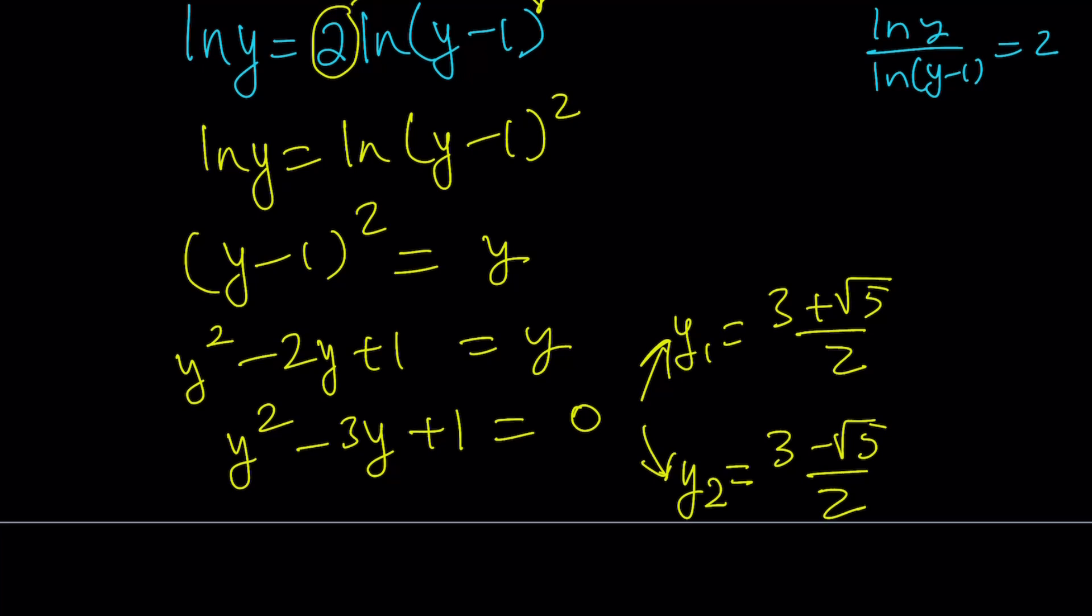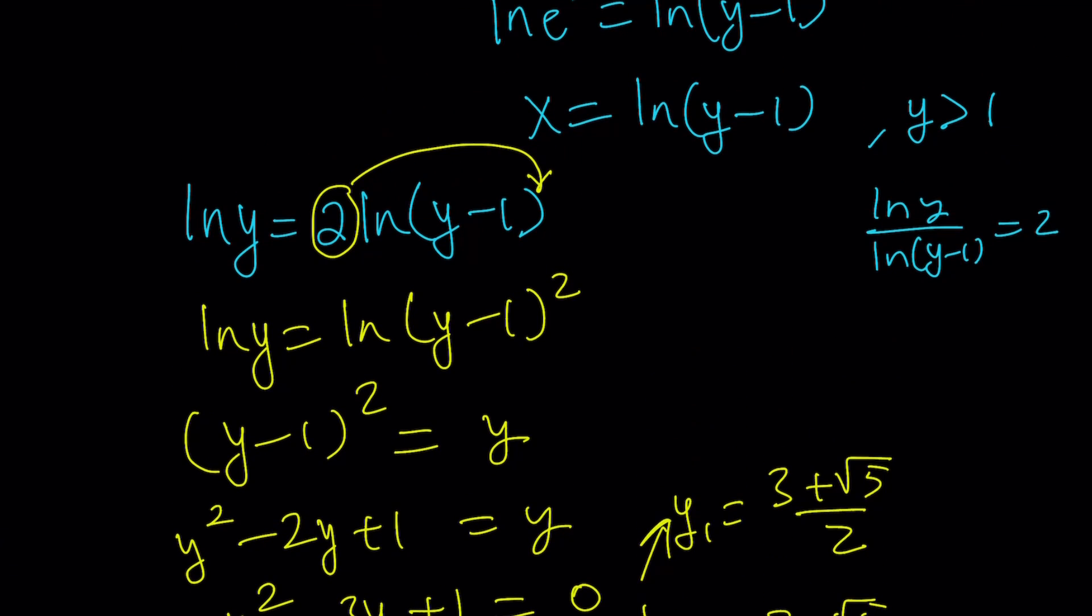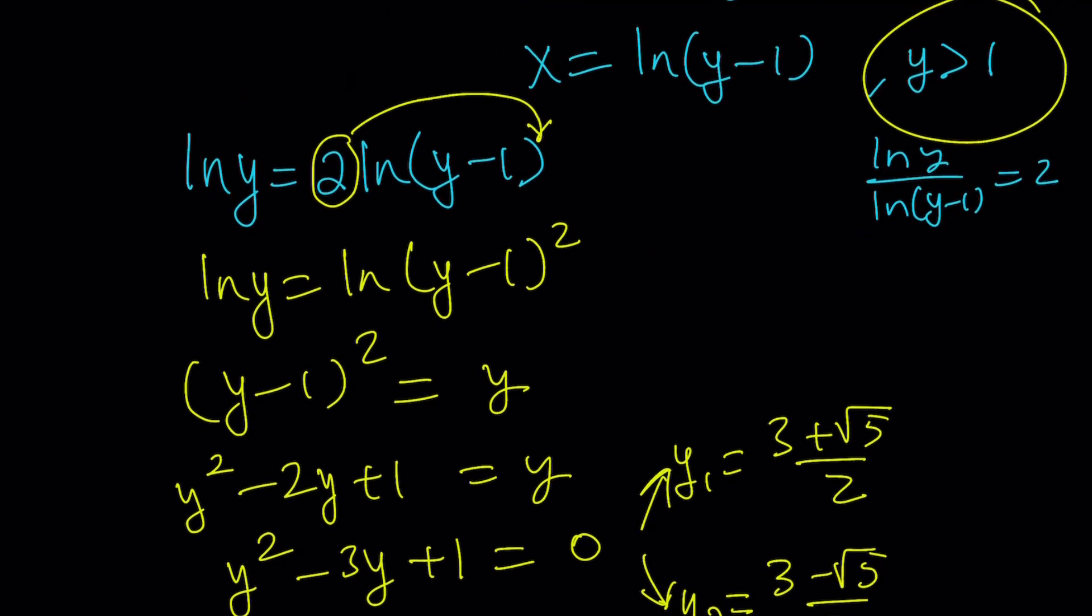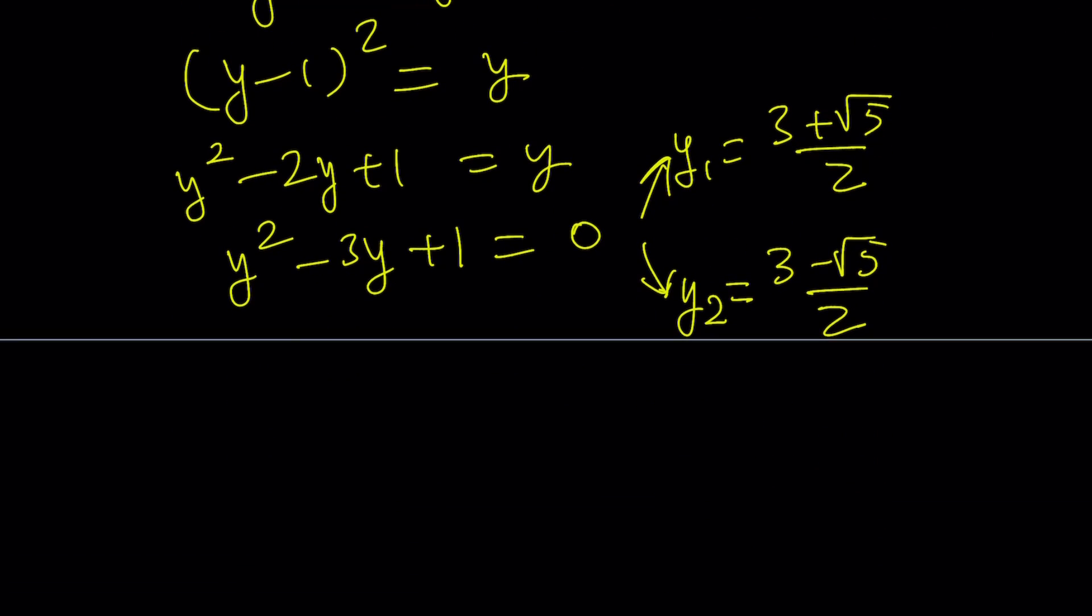Thinking back to method 1, we know that it's not the case. But how do you check that? We have two values, and we want y values to be greater than 1. Remember, that was the condition, because we are looking at ln(y - 1). y - 1 has to be positive. So the question is, are both of these y values greater than 1? For example, is (3 + √5)/2 greater than 1? The answer is yes, because even 3/2 without the √5 addition is going to be greater than 1. So this is definitely greater than 1.